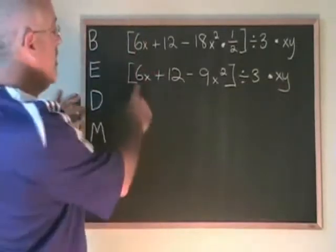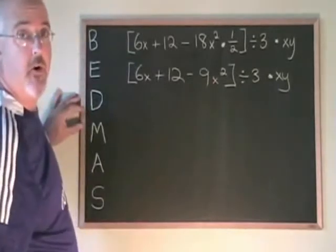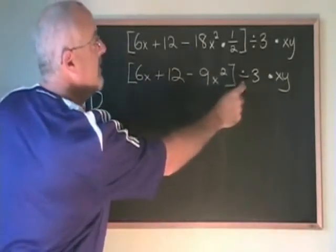Now we still have a bracket, division, multiplication, but the bracket cannot be simplified anymore. So the bracket is just there to tell us that all three of these terms are being divided by 3.